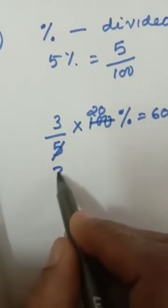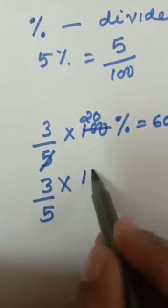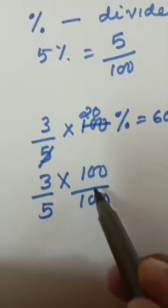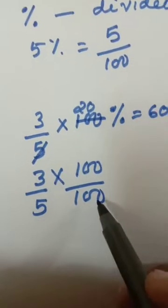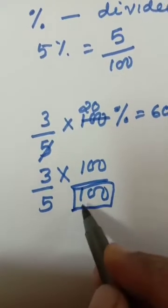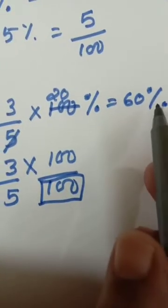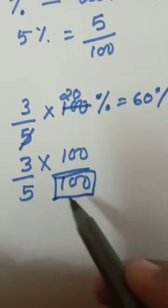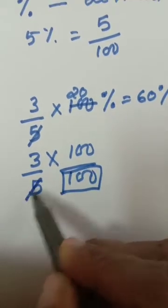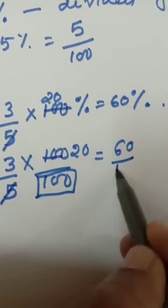Another method: 3 by 5 multiplied by 100 by 100. Instead of writing 100%, you can write 100 by 100. Why? Because percentage means divided by 100. After that you have to make a box around the denominator 100 so that you cannot cut out that 100. Because you want the denominator to be 100. You can cut out the rest of the numbers. The result is 60 by 100.